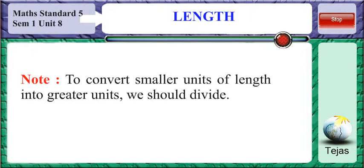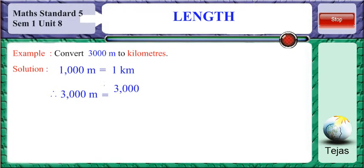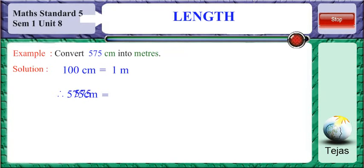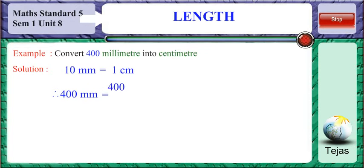Observe the following examples. Convert 3000 meters to kilometers: since 1000 meters equals 1 kilometer, 3000 ÷ 1000 = 3 kilometers. Convert 575 centimeters into meters: since 100 centimeters equals 1 meter, 575 ÷ 100 = 5.75 meters. Convert 400 millimeters into centimeters: since 10 millimeters equals 1 centimeter, 400 ÷ 10 = 40 centimeters.